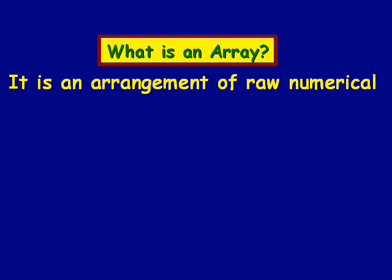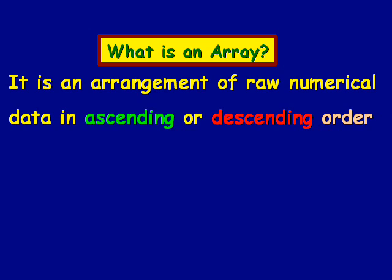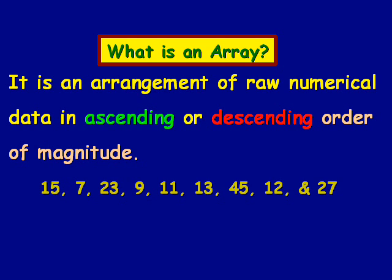What is an array? An array is an arrangement of raw numerical data in either ascending or descending order of magnitude.